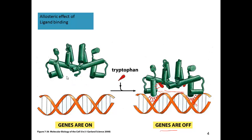In the case where tryptophan is not bound, we have a smaller angle and a shorter distance between the two arms, such that they will not sit down properly. Instead of sitting in the major grooves correctly, it sits down offset so it cannot bind to both major grooves simultaneously. Again, this is just a consequence of having too much tryptophan in the cell — or a sufficient amount that you don't need to make more — and it will automatically regulate this protein and prevent the genes from being expressed.